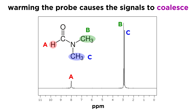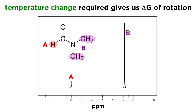But if you warm up the probe, slowly the two signals broaden and coalesce into a singlet located exactly at the midpoint of the two former signals. By measuring the behavior of the signals versus temperature, and using a complex formula derived from the standard Bloch equations, we can obtain the activation energy for the rotation around this bond that would be required to make these methyls chemically equivalent.